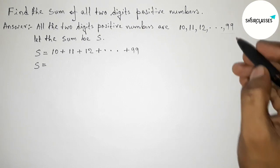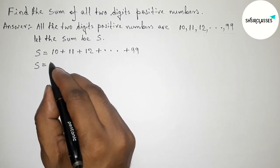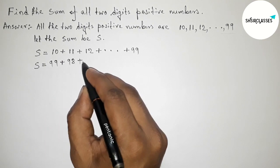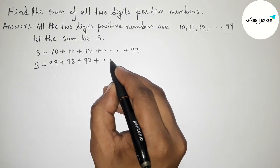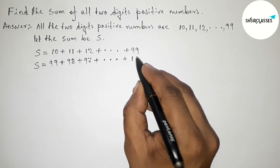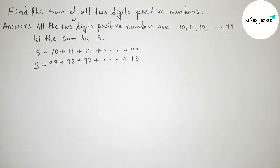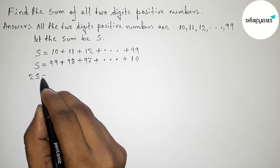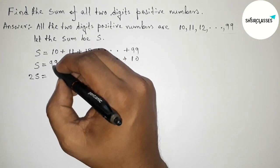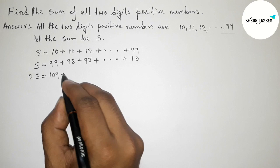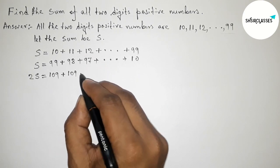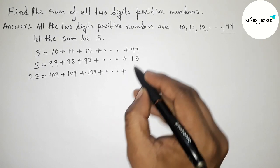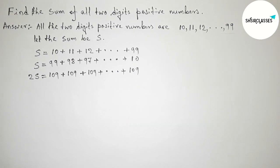We can also write the sum in reverse order: S = 99 + 98 + 97 + ... + 10. Adding both expressions, each pair sums to 109, and every pair gives a total of 109, all the way through — so each column adds to 109.